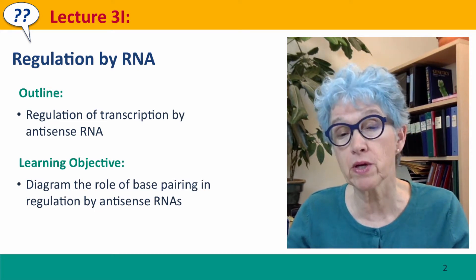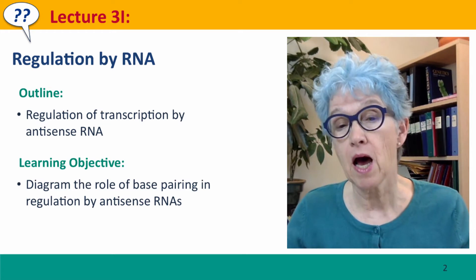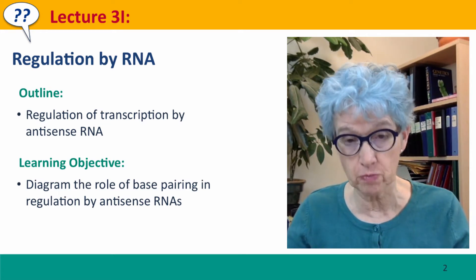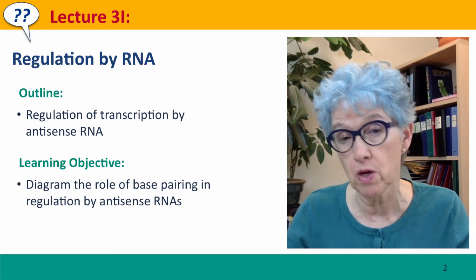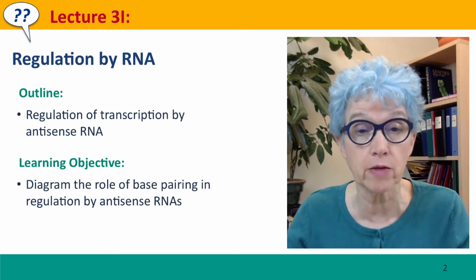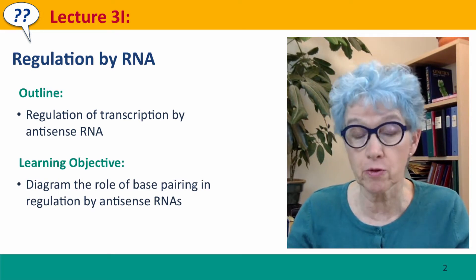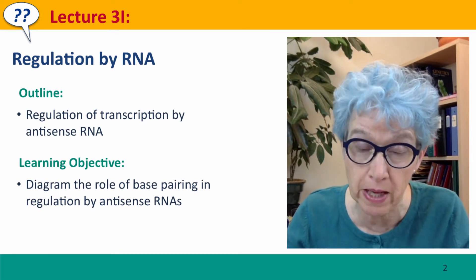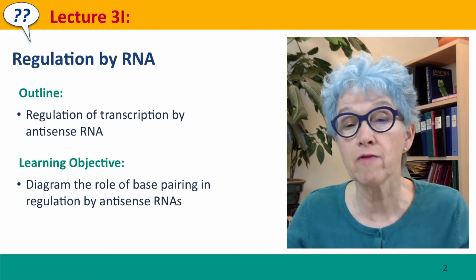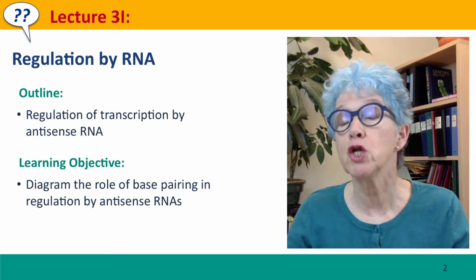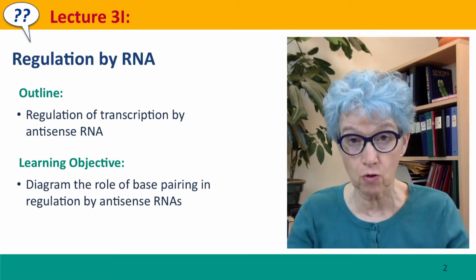We talked about how we can regulate the transcription of genes by telling RNA polymerase what to do, and we talked about how we can regulate protein activity by telling proteins what to do after they're made. This is a way of telling messenger RNAs not to make the protein that they code for.